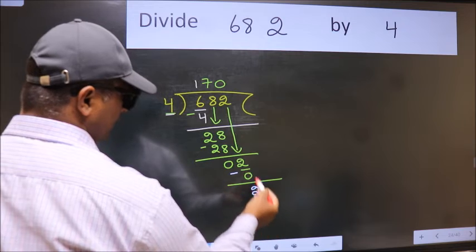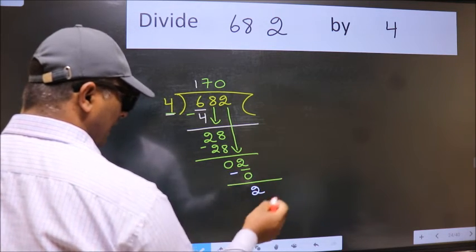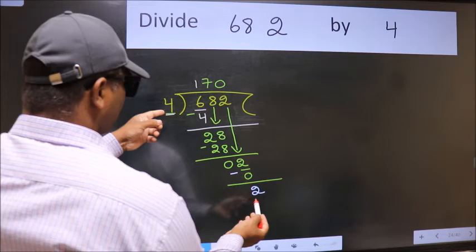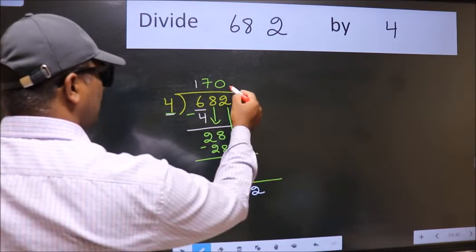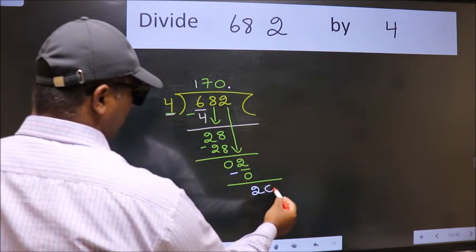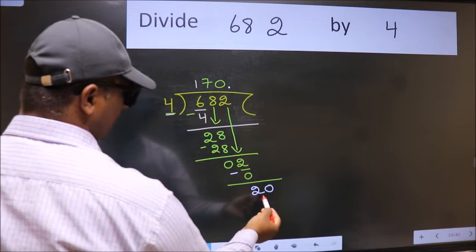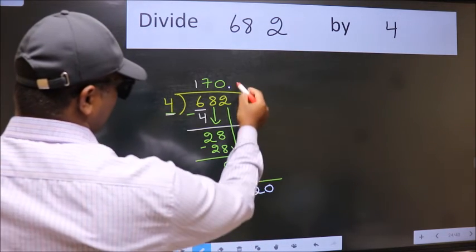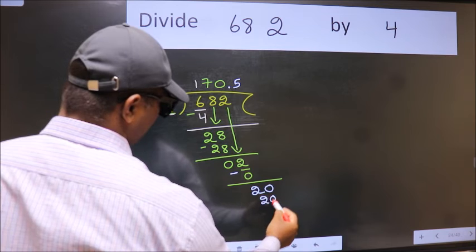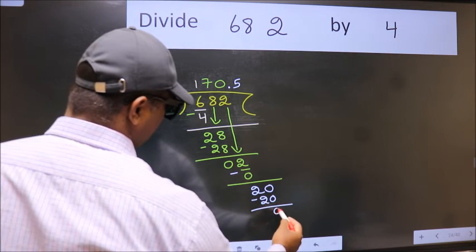Over here, we did not bring any number down, and 2 is smaller than 4. So now we can put the dot and take 0. So 20. When do we get 20 in the 4 table? 4 times 5 equals 20. Now we subtract. We get 0.